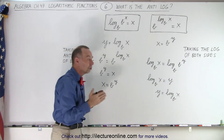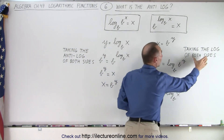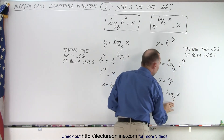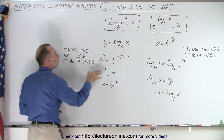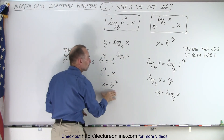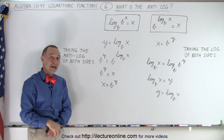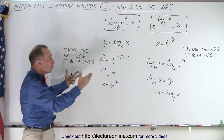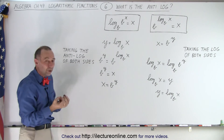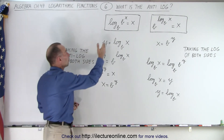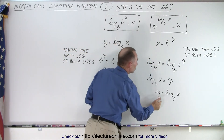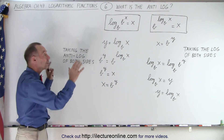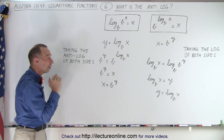So the purpose of taking the log of both sides is to go from the exponential form to the logarithmic form. And the purpose of taking the anti-log of both sides is to go from the logarithmic form to the exponential form. This is one of the most important conversions we do with logarithms — we do it all the time when dealing with exponential and logarithmic functions, and there are lots of applications.